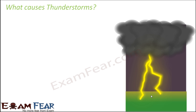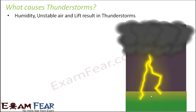Let us look at the key factors which result in thunderstorms. We know how wind happens — that we already know, which happens due to uneven heating of the earth. Now, what causes these thunderstorms? There are three important factors which lead to thunderstorms and they are humidity, unstable air, and lift.